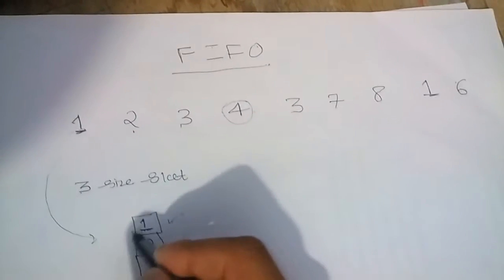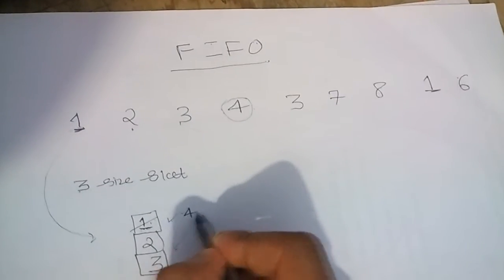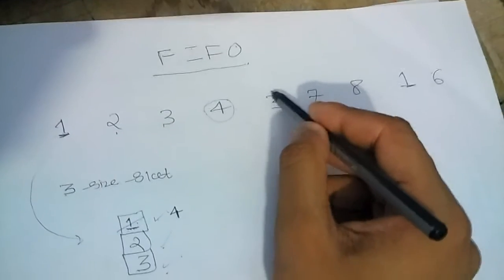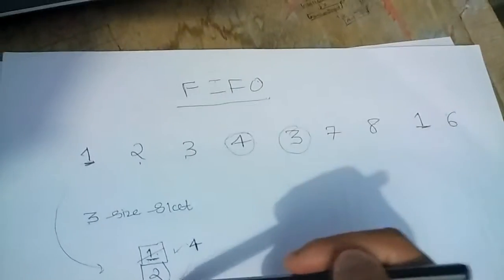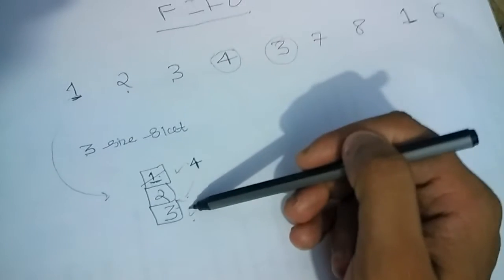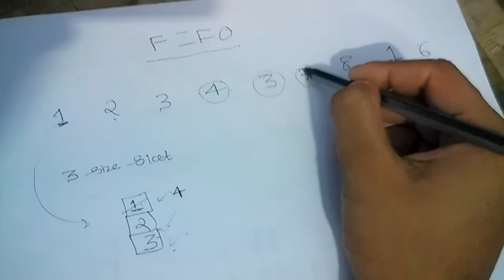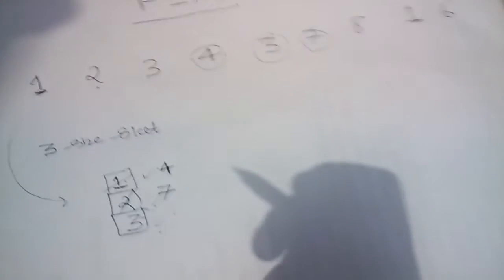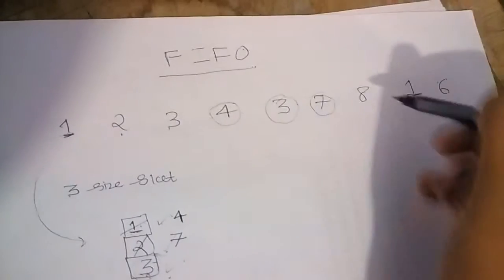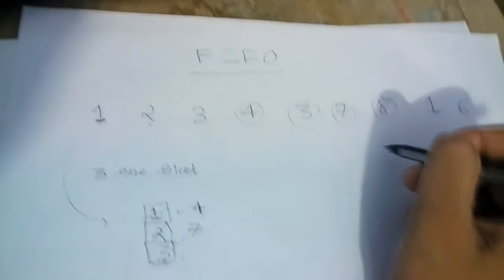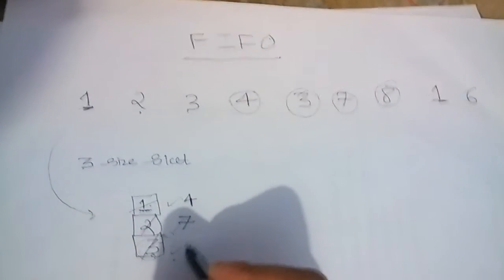So here I will remove the process number 1 and replace it by 4. Now we are here. We know that the process number 3 already is present in our frame, so we ignore it. We go to the 7. We find it not contained here, so we remove 2 and put there 7. Now it turns out 3 to get replaced. We see here the process number 8 wants to come into the memory. So we remove out the 3 and bring the process number 8.